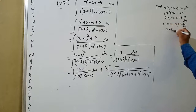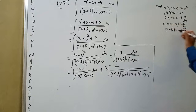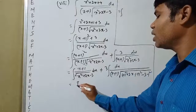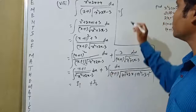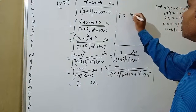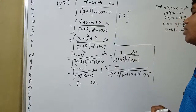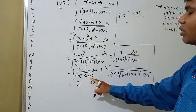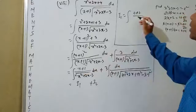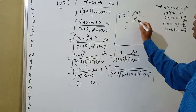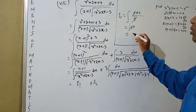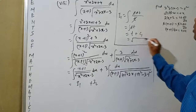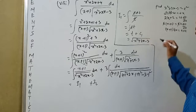The 2s cancel, so (x+1)dx equals t dt. Call the first integral I1 and the second I2. For I1: integration of (x+1)dx divided by root over (x²+2x-3) becomes t dt divided by t², so root is t, and this simplifies to integration of dt equals t plus c1. Substituting back, t equals root over (x²+2x-3), so I1 equals √(x²+2x-3) plus c1.